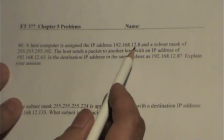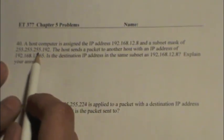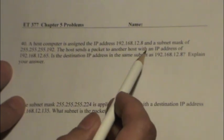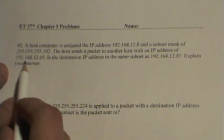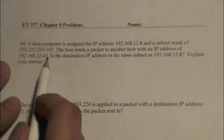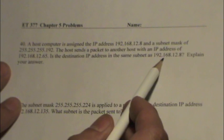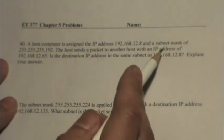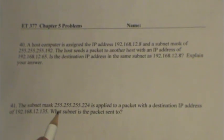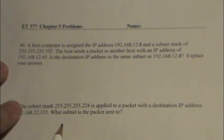The question is: a host computer is assigned the IP address 192.168.12.8 and a subnet mask of 255.255.255.192. The host sends a packet to another host with an IP address of 192.168.12.65. Is the destination IP in the same subnet as 192.168.12.8?